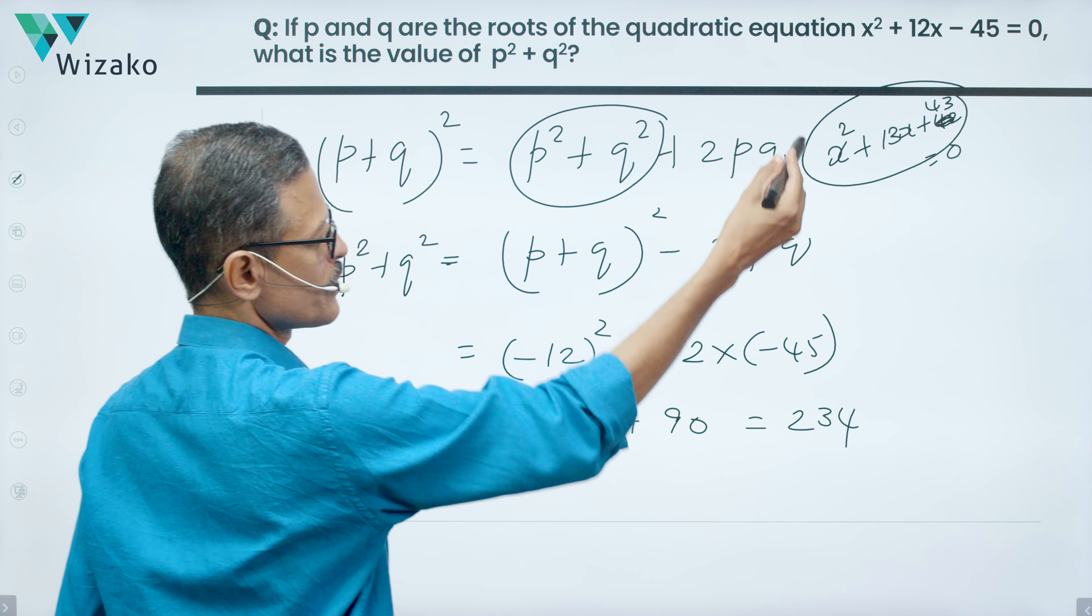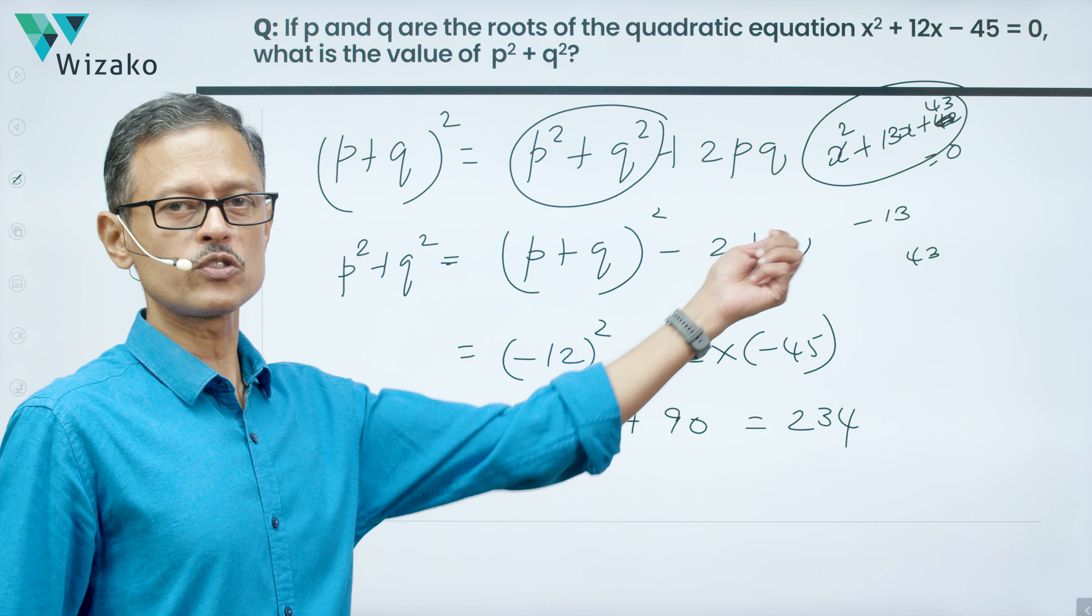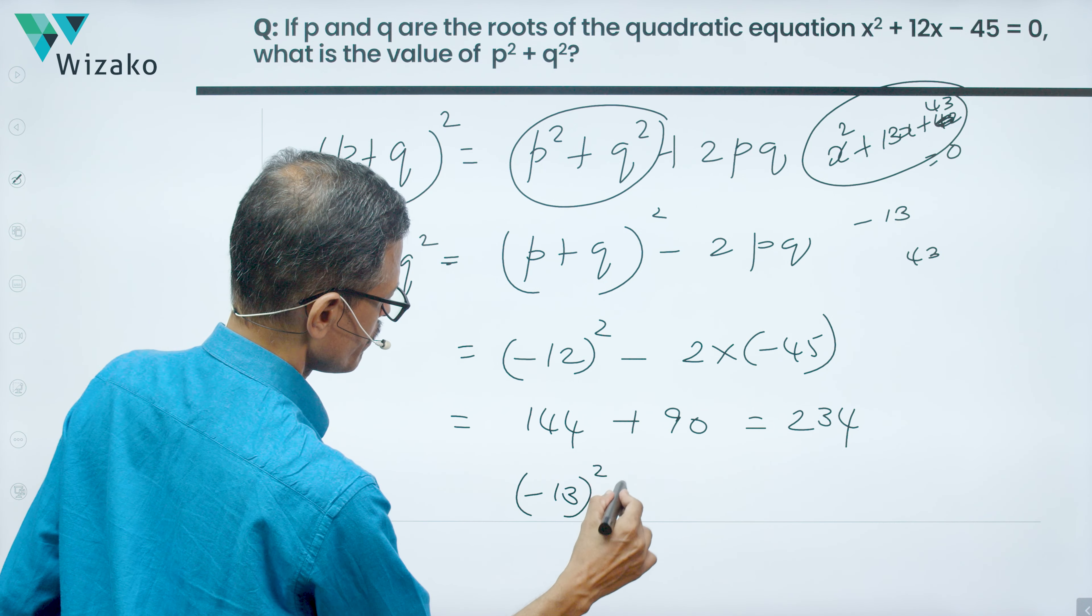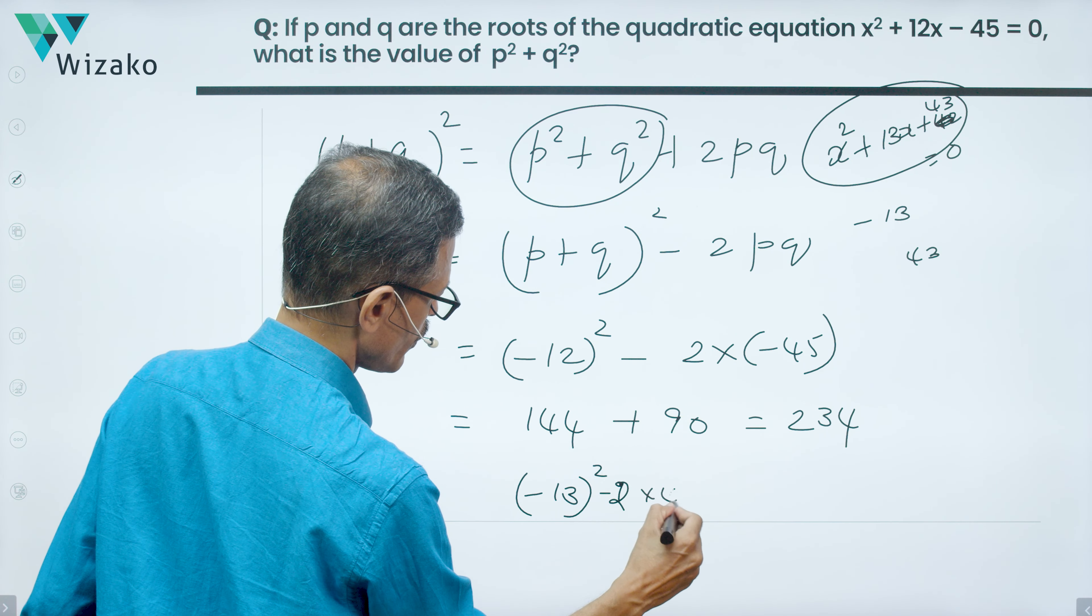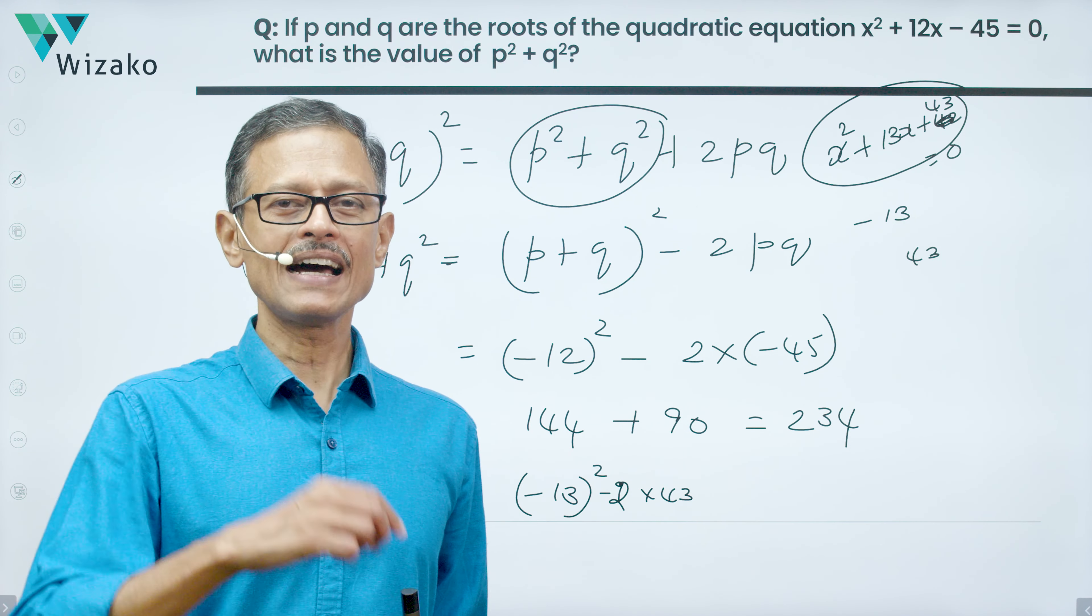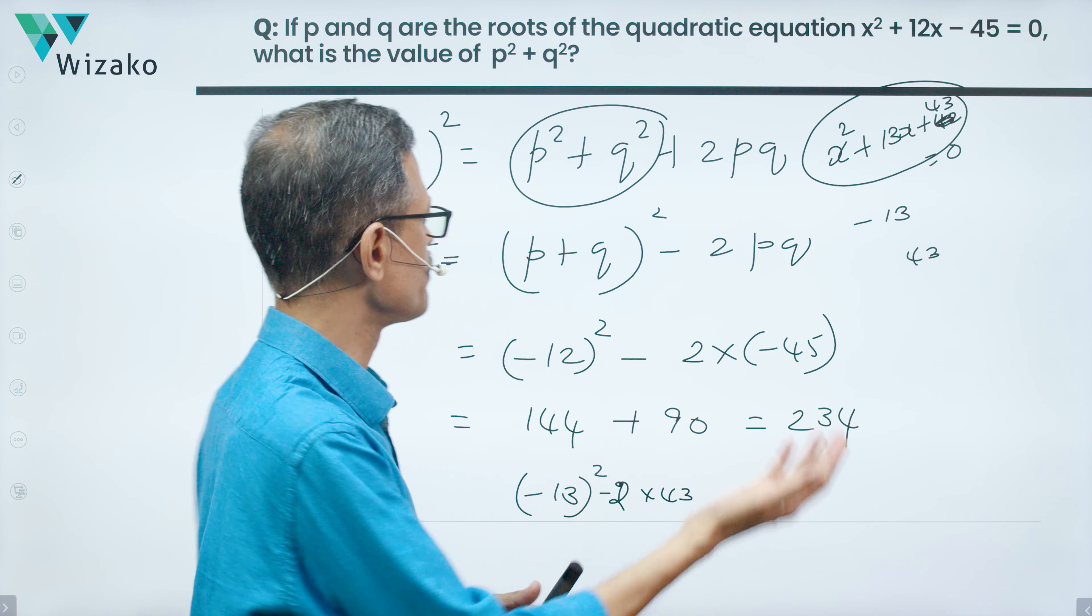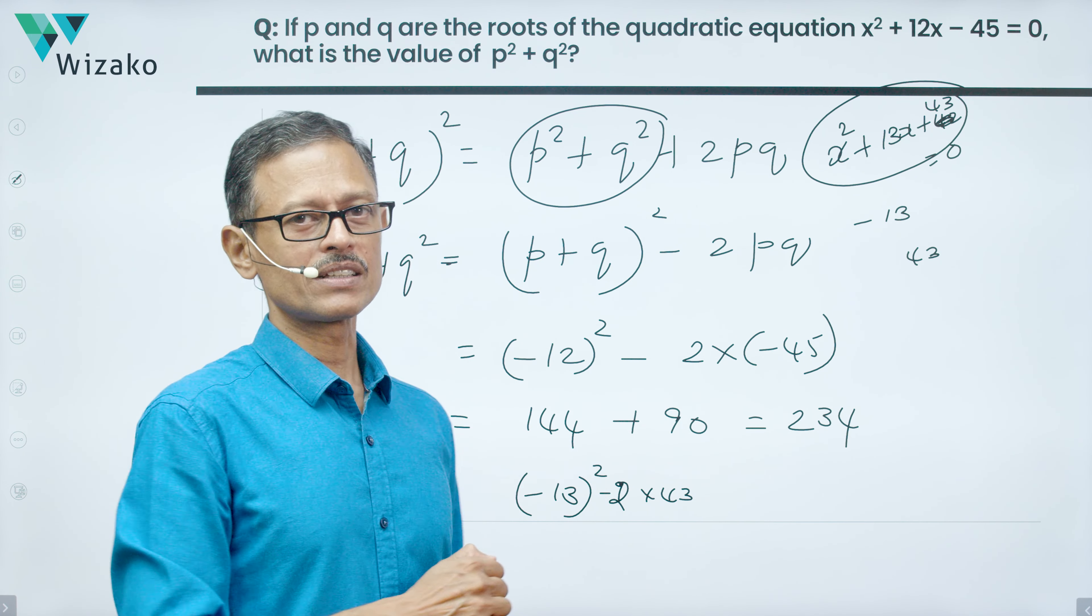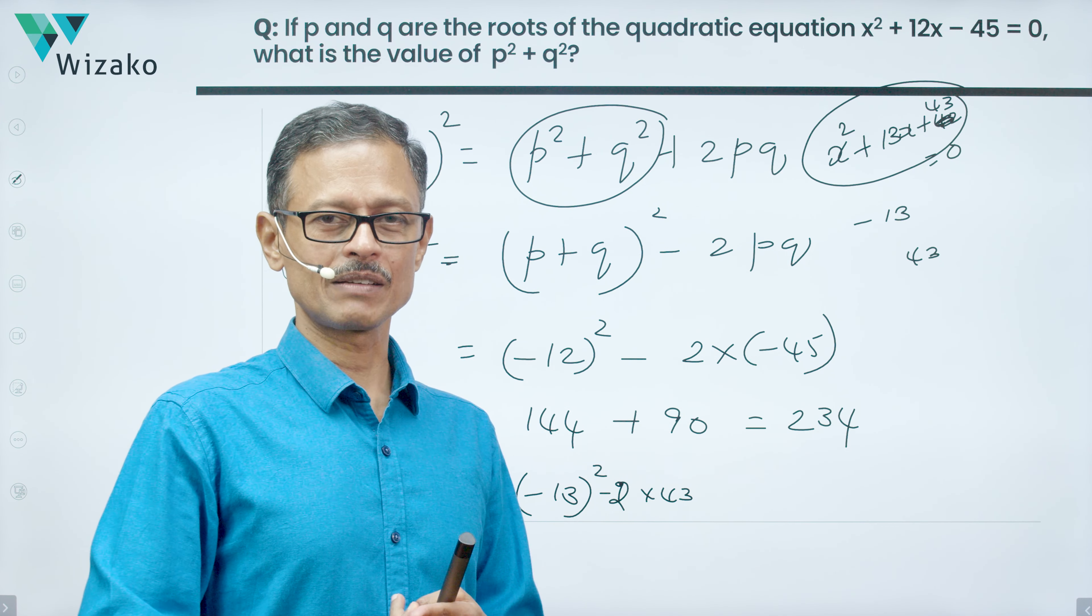this would have made a lot more sense for this question. What is the value of p + q? It's -13. What's the value of pq? That's equal to 43. So what is going to be your p² + q², which is the sum of the roots squared, which is (-13)², minus 2 times the product of the roots, which is 2 into 43? 169 minus 86 would have given us the answer in a jiffy. So where it is not factorizable, where the roots are not going to be numbers the way we got here as -15 and +3, those kind of scenarios, going with the second method is probably a wiser option.